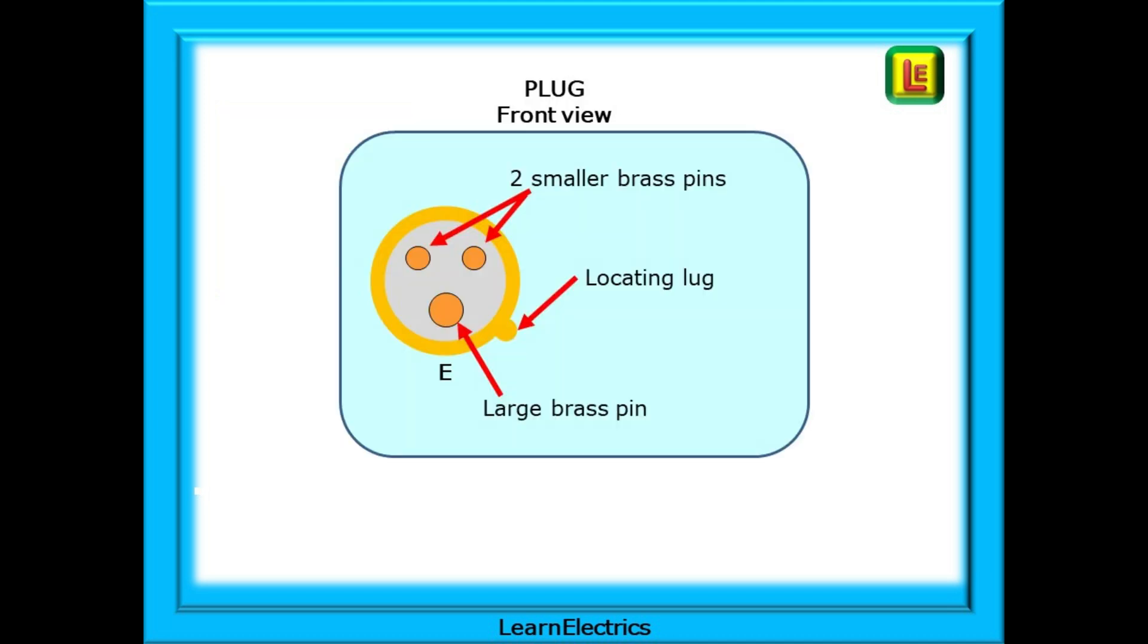If we look at the front view of a yellow plug we will see three brass pins - one large pin and two smaller pins. If we position the plug so that the large pin is at the bottom, we see that we also have a locating lug positioned at the four o'clock position. This will match up with the yellow socket and ensures that under normal circumstances only yellow plugs can locate into yellow sockets.